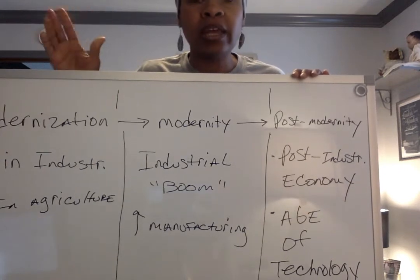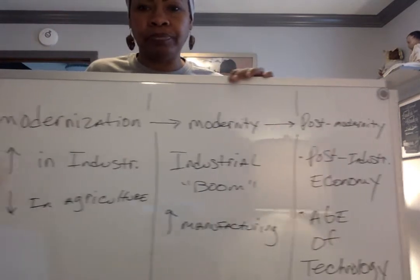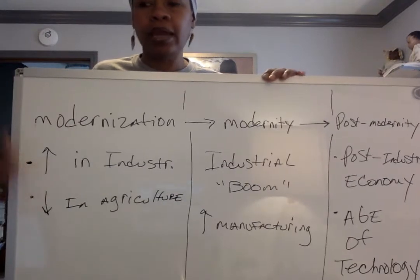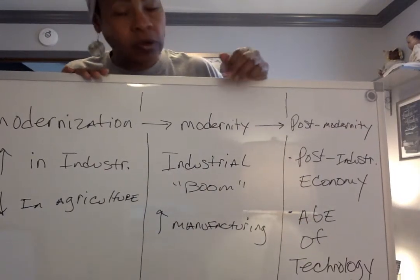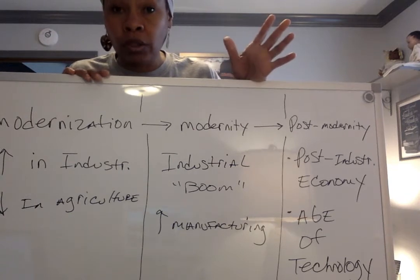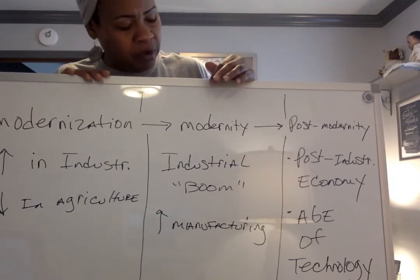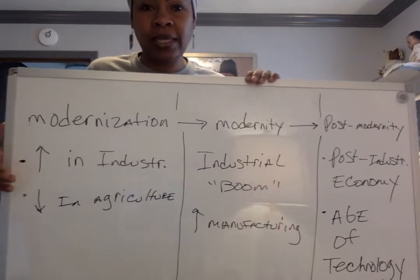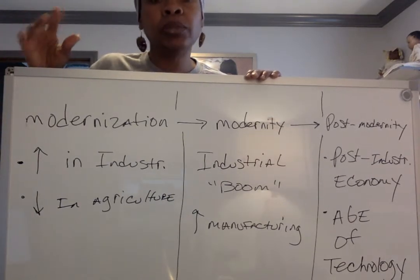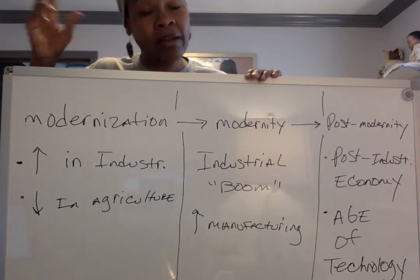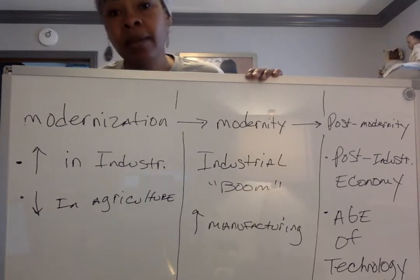Let's start by talking about what modernity is. Modernity refers to social patterns or culture that resulted from industrialization. But before we get to that, we have to touch on modernization, which was the decline of agriculture when we made everything by hand.